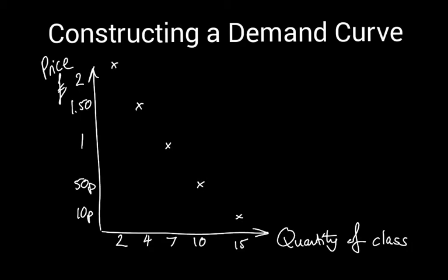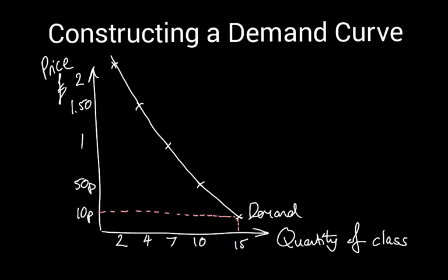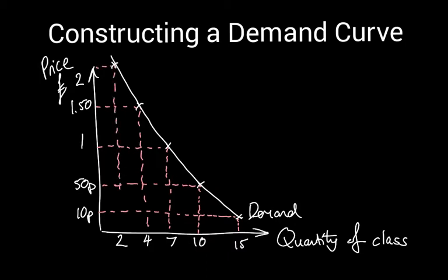What we normally create when we plot this sort of thing — and certainly the type of line we'd create if we were plotting this for many thousands of customers, which is what we normally talk about when discussing a product — is a curve that represents the relationship between demand and price. If I join these points up, this curve represents the relationship between the price of a cup of coffee and the quantity demanded. When the price is 10p, there are 15 cups demanded; at 50p, quantity demanded is 10; at £1, quantity demanded is 7; at £1.50, it's 4; and at £2, it's 2. We normally use a dotted line in economic analysis to represent these points.